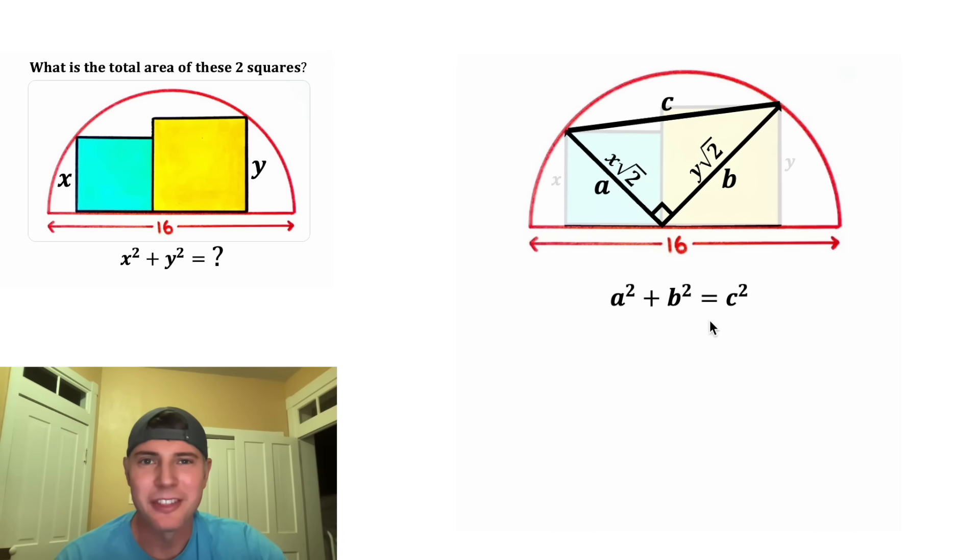And now we can do Pythagorean theorem. We have a squared plus b squared is equal to c squared. Or in other words, x root two squared plus y root two squared is equal to c squared.